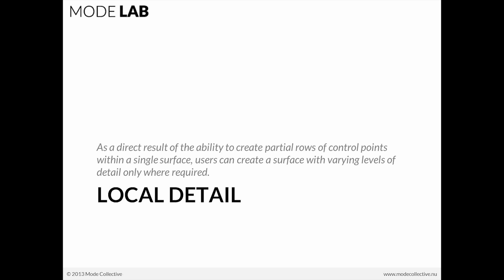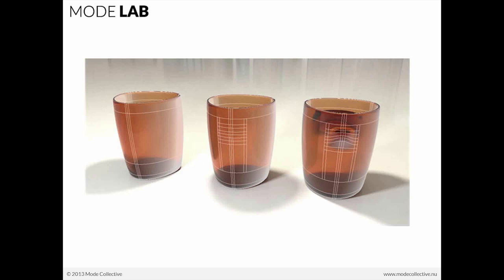So the second is local detail. It's really a direct result of the ability to create partial rows of control points within a single surface. Users can create a surface with varying levels of detail only where it's required. And that's a really big deal. Here you can see a little cup where partial rows and partial columns have been inserted in order to produce this kind of little indentation in the surface, which is locally defined.